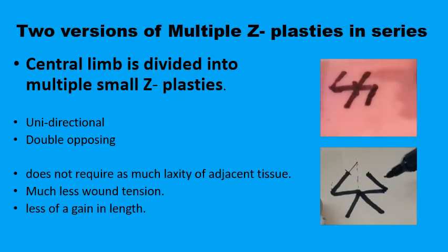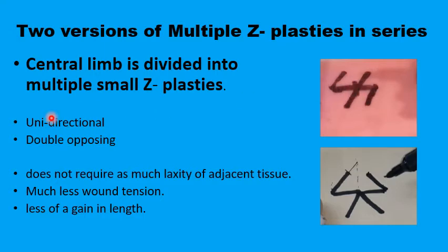The fundamental feature of these multiple Z-plasties in series is that the central axis of the scar or web will be divided into smaller units forming the central limb of multiple Z-plasties. In this example, we've divided the central axis into two units with two Z-plasties going in the same direction — unidirectional, multiple in series. Or you can do it in reverse: you still divide the central axis into two, but have the Z-plasties opposing each other.